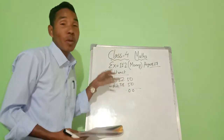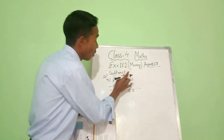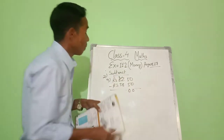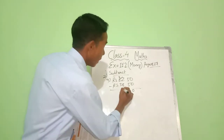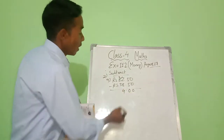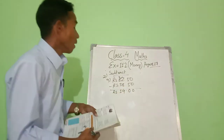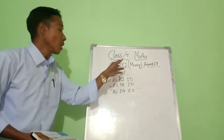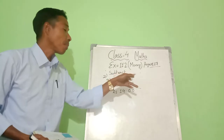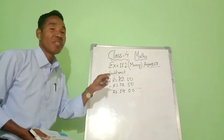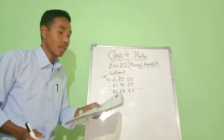Eight is greater than two, so we have to borrow one from the next digit. We borrow one from five, so two becomes 12. Twelve minus eight is four. Four minus three is one. So 14 rupees is left. From 52 rupees 55 paise, if you deduct 38 rupees 55 paise, 14 rupees is left — that is our answer.